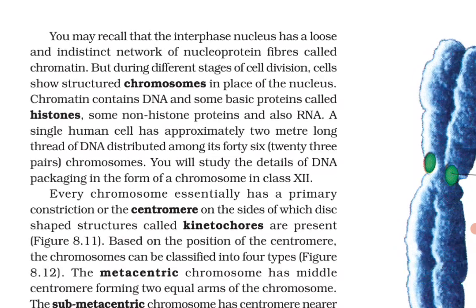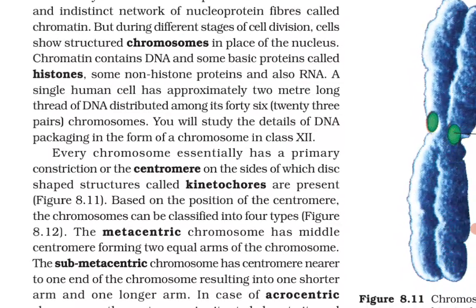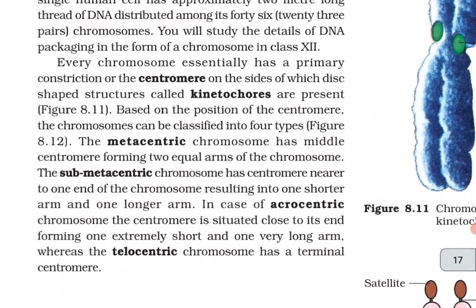The interphase nucleus has a loose and indistinct network of nucleoprotein fibers called chromatin, but during different stages of cell division cells show structured chromosomes in place of the nucleus. Chromatin contains DNA and some basic proteins called histones, some non-histone proteins, and also RNA. A single human cell has approximately two meters of DNA thread distributed among its 46 chromosomes. Every chromosome essentially has a primary constriction or centromere, on the sides of which disc-shaped structures called kinetochores are present.